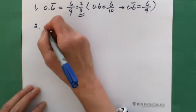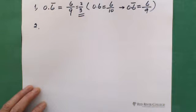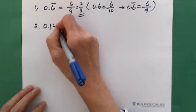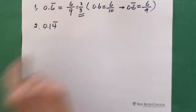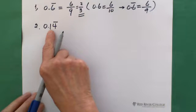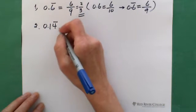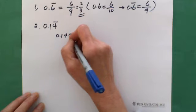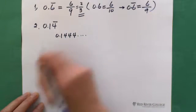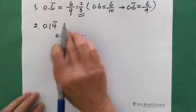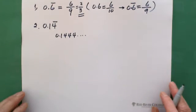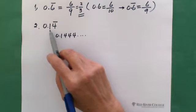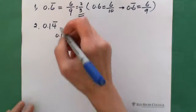Now if we have this situation: you have one digit repeating, but the number is 0.14 repeating — meaning only the 4 is repeating, not the 1. So 0.14 repeating actually means 0.1444... So only one digit is repeating; the 0.1 part is not a repeating decimal. How do we convert this to a fraction?